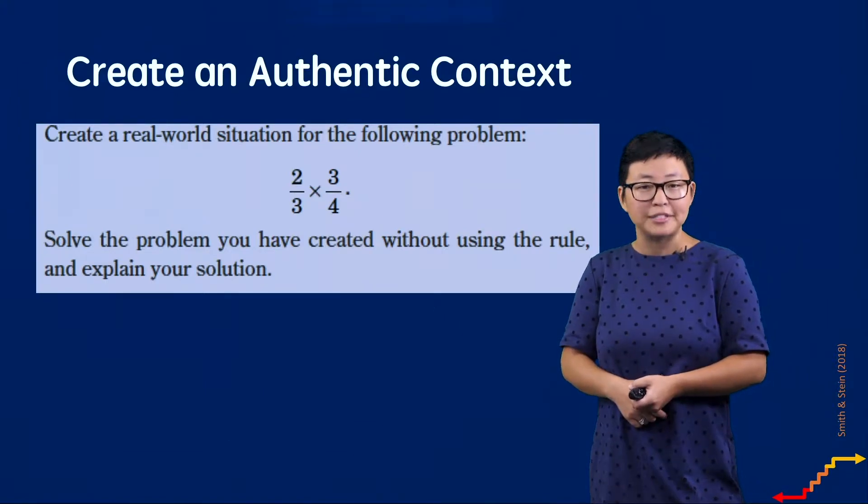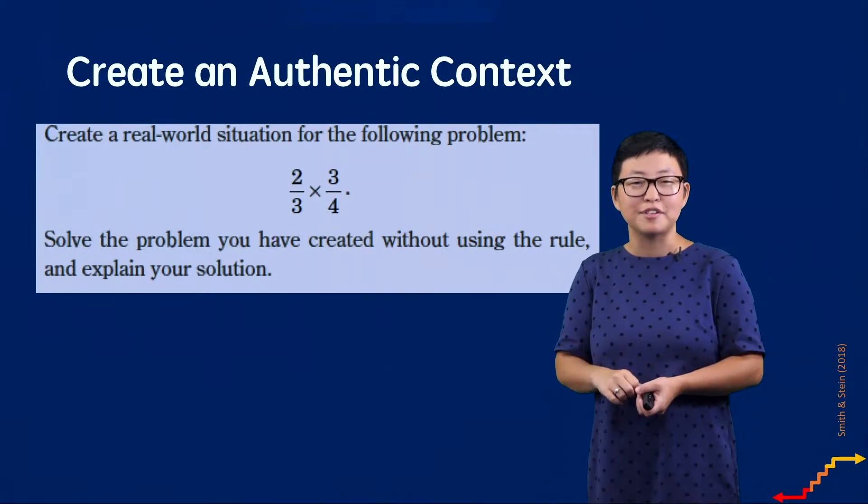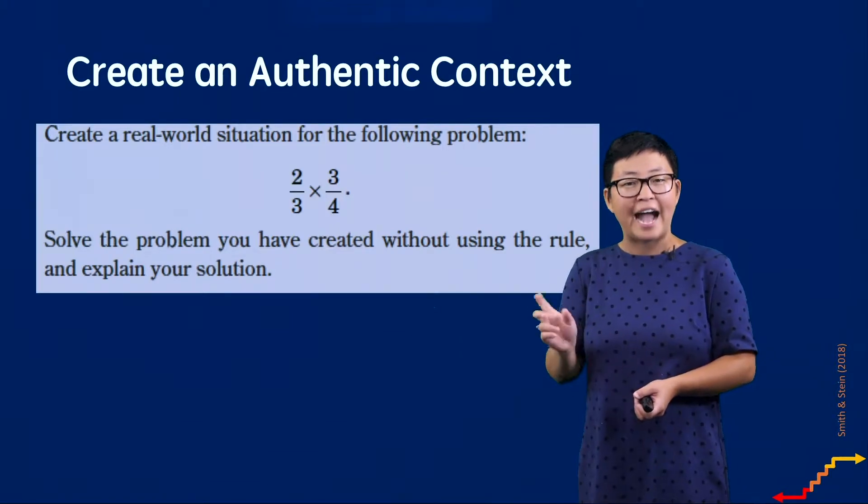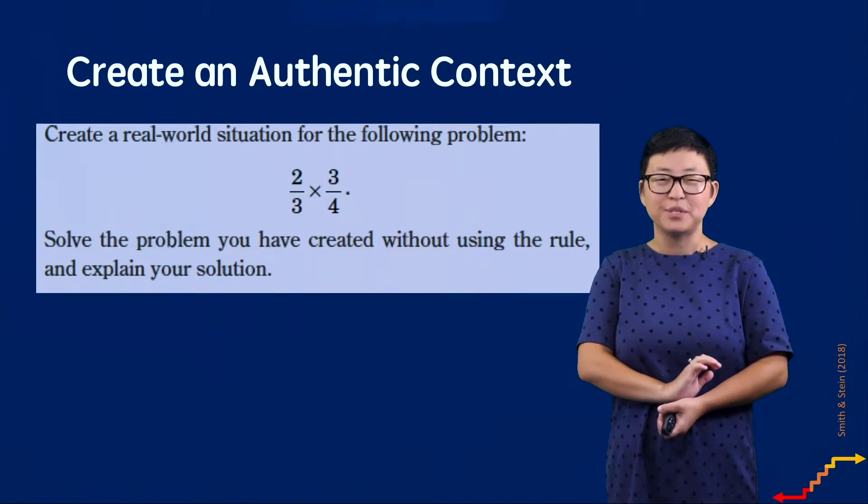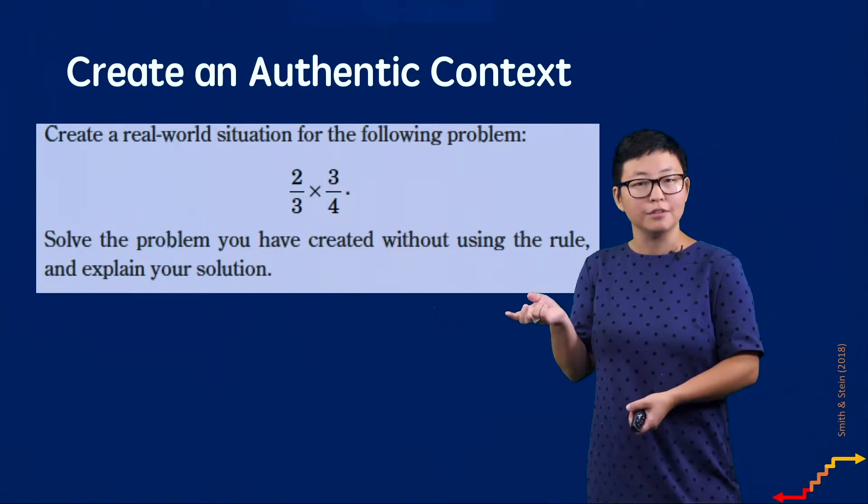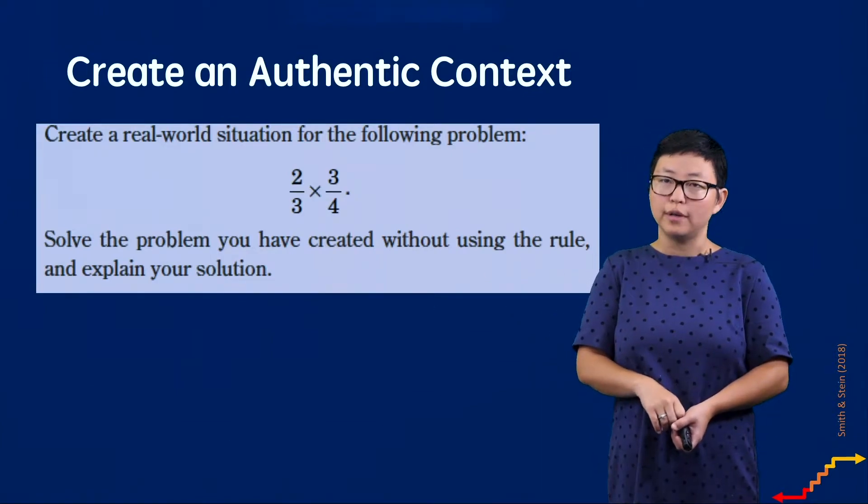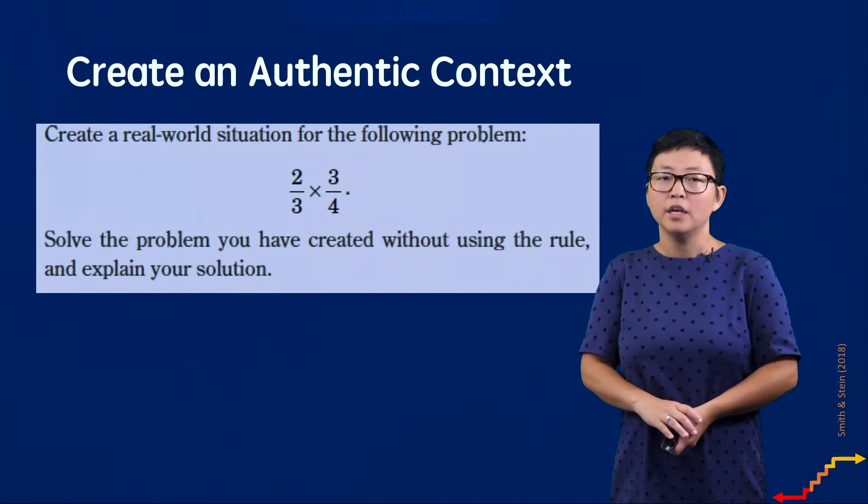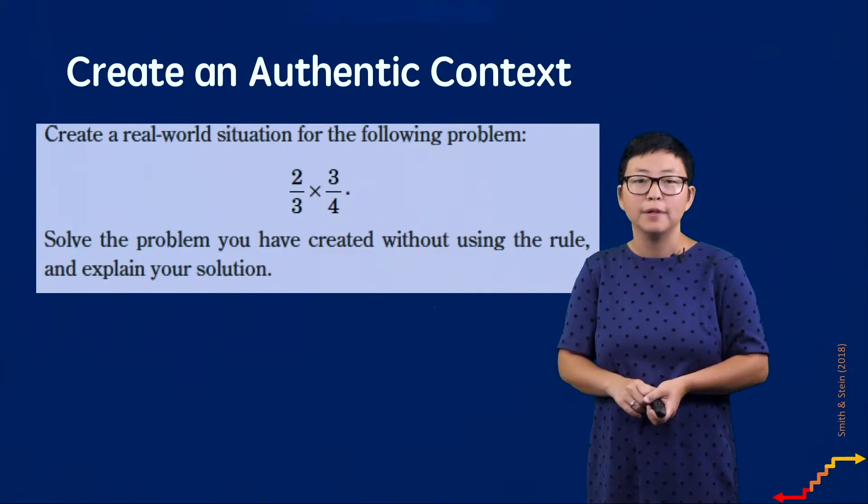The last strategy we're going to talk about today is creating an authentic context. We mentioned that earlier when we were talking about that adding integers problem, but here it's: Create a real-world situation for the following problem: 2/3 × 3/4. Solve the problem you've created without using the rule and explain your solution.